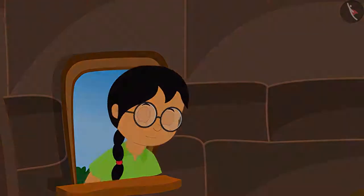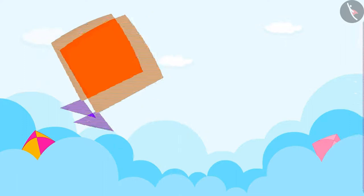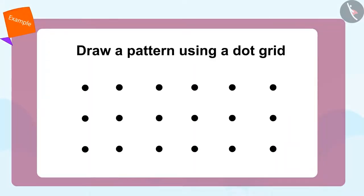Come children, let's take a look at how Minu makes this pattern using the dot grid. First we will create a square like this. Now we will create another square below using this corner of the first square like this.